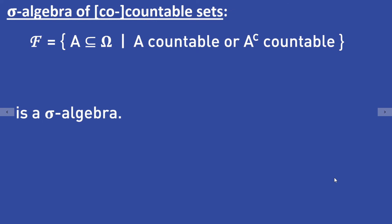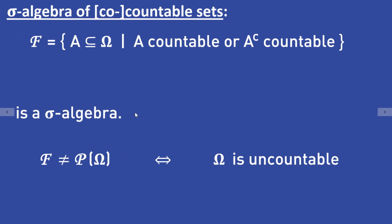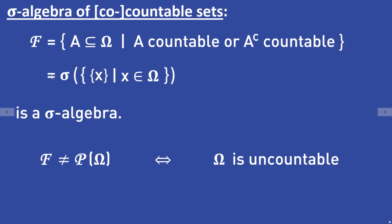Another example is the collection of subsets of omega which are countable or whose complements are countable — this is a sigma algebra. That sigma algebra is distinct from the power set of omega if and only if omega is uncountable. It is the sigma algebra generated by the singletons of omega.